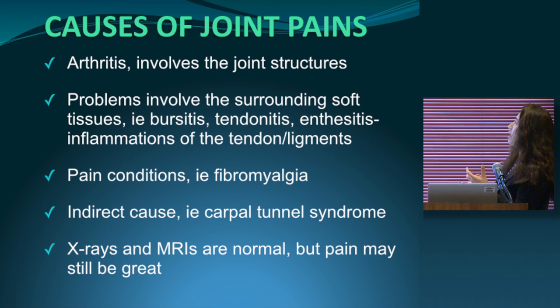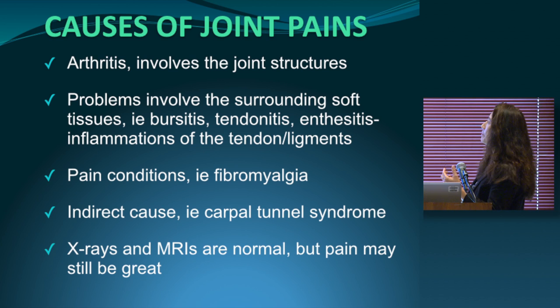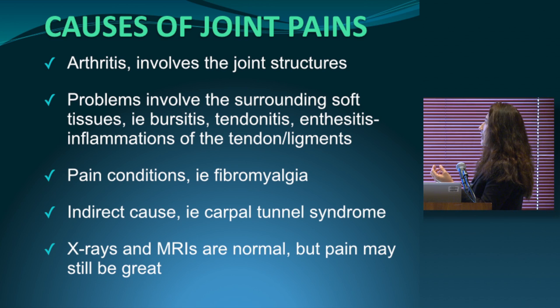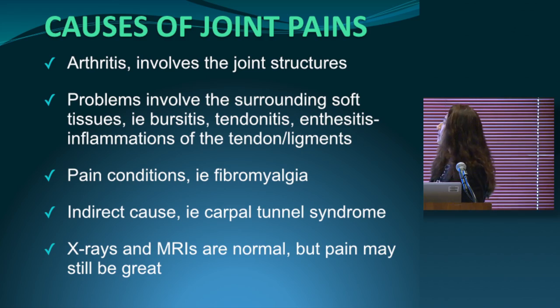The causes of joint pain: whenever a person feels their joints hurt, it can be due to true arthritis involving the joint itself, or problems with soft tissues surrounding the joints like tendons, ligaments, and bursa. It can also be due to pain conditions like fibromyalgia, or indirect causes like carpal tunnel, where a pinched nerve gives perceived joint pain. In many of these conditions, imaging like x-rays or MRIs can be normal even though the pain is great, especially at early stages when imaging may not detect changes.